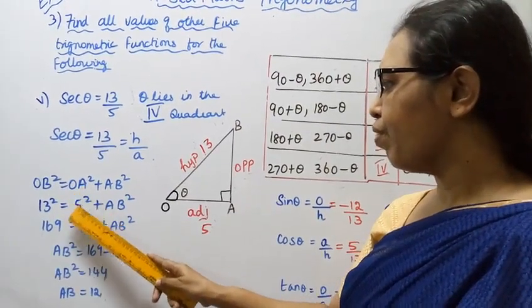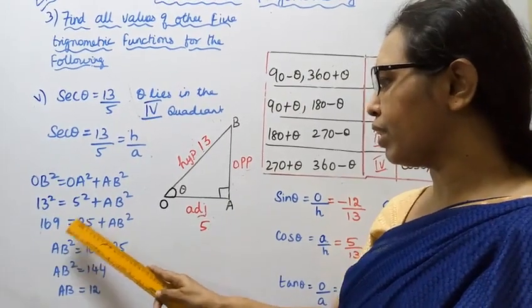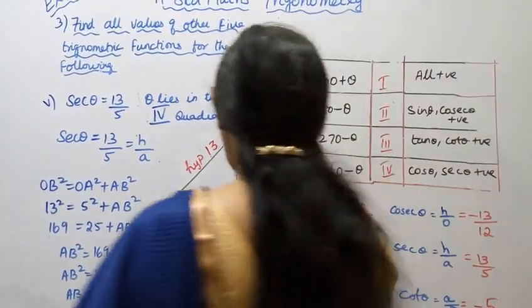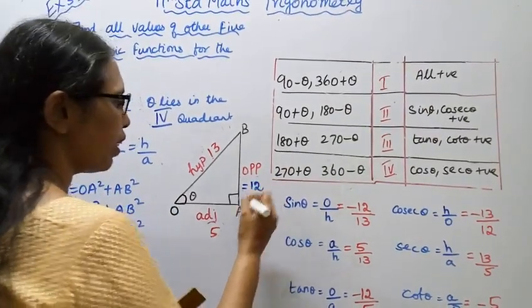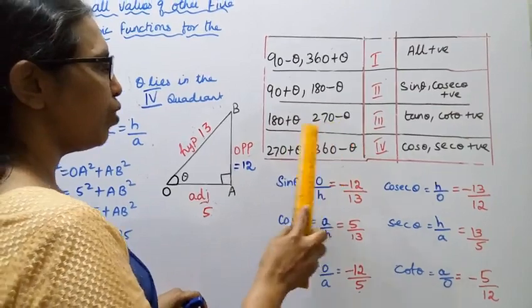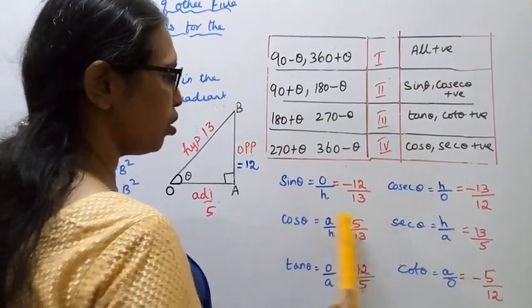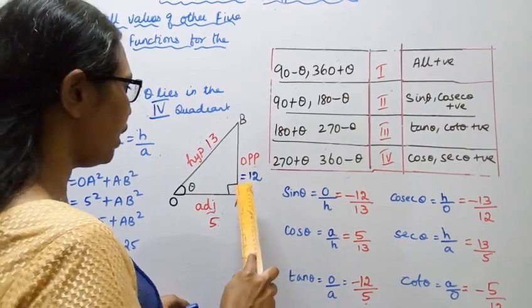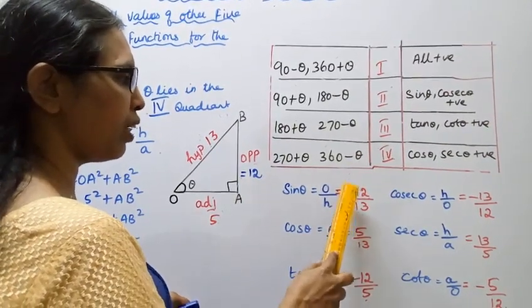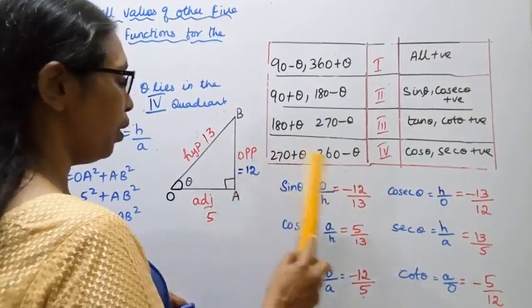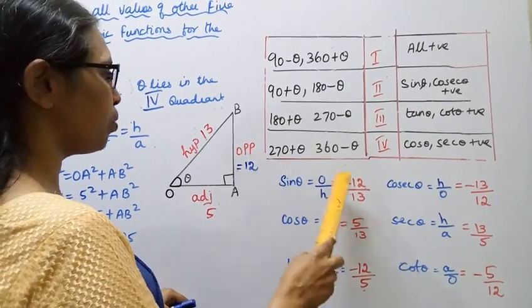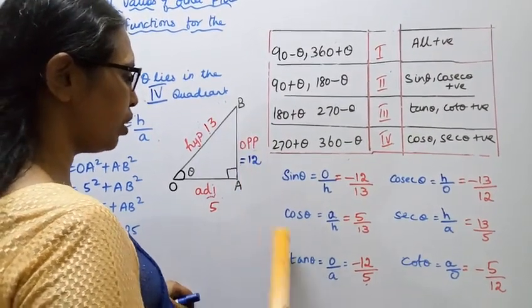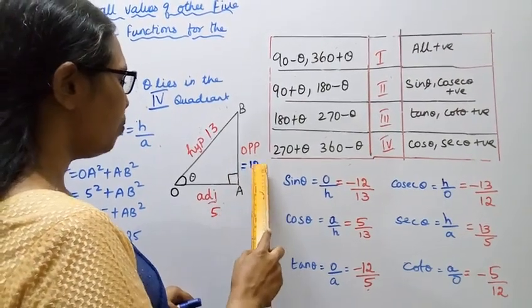13 squared equals 169, 5 squared equals 25. AB squared equals 169 minus 25 equals 144, so AB equals 12. Therefore: sin theta equals opposite by hypotenuse equals minus 12 by 13, cos theta equals adjacent by hypotenuse equals 5 by 13, tan theta equals opposite by adjacent equals minus 12 by 5.